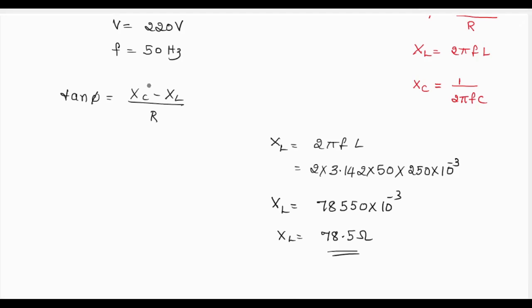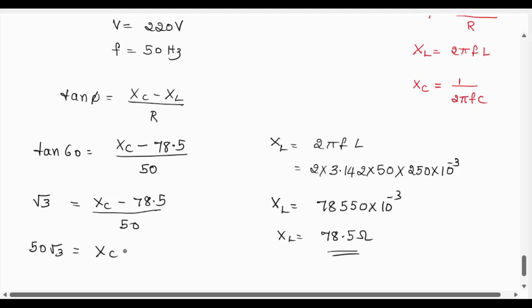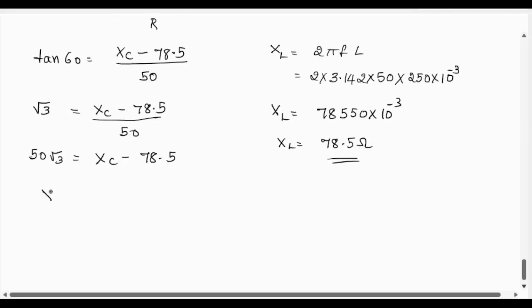Substitute the value of XL in this formula, that is tan φ. Tan 60 = (Xc - XL) / R. We do not know the value of Xc, so Xc - 78.5 divided by 50. Tan 60 is √3, which is equal to (Xc - 78.5) / 50. Or 50√3 = Xc - 78.5, or Xc = 165.1 ohms.